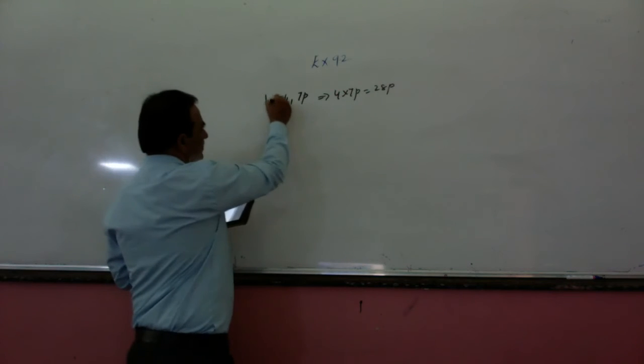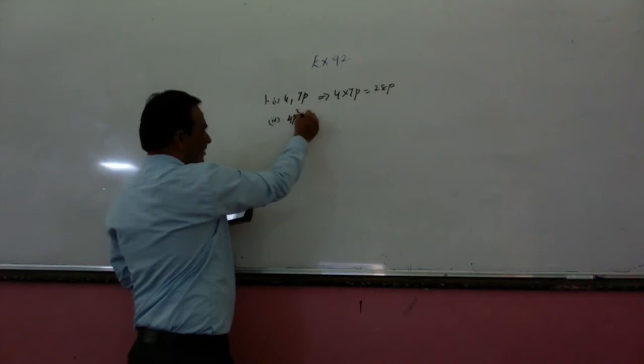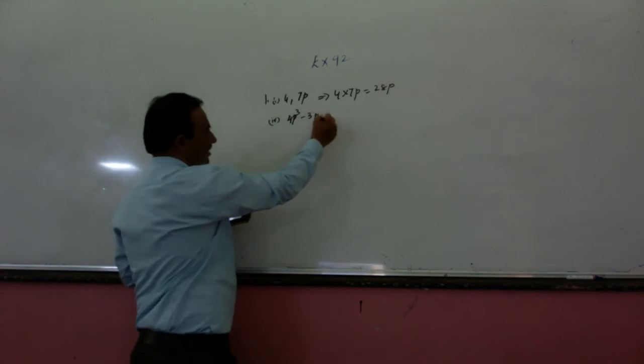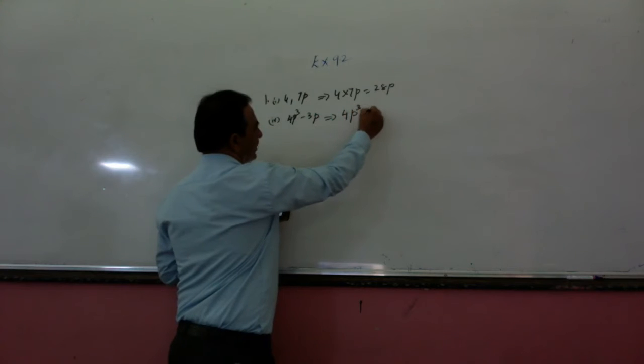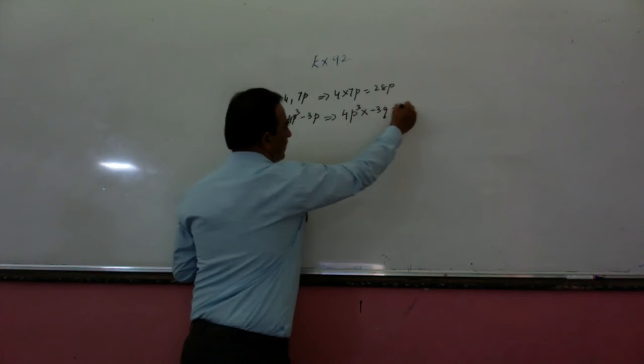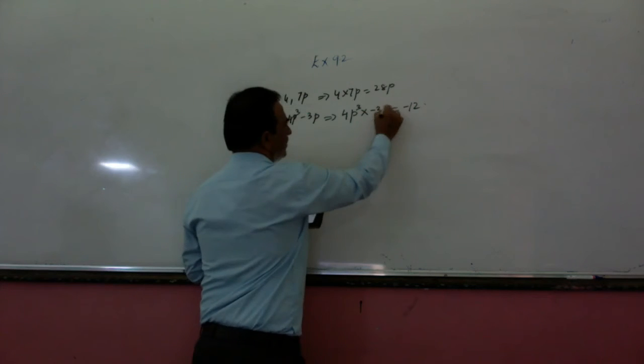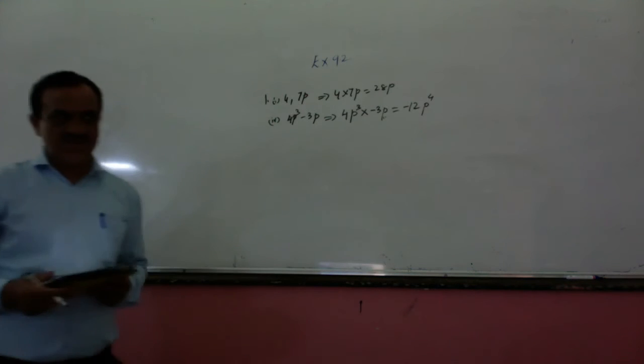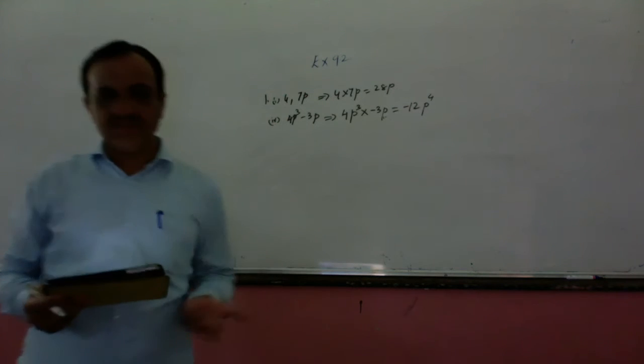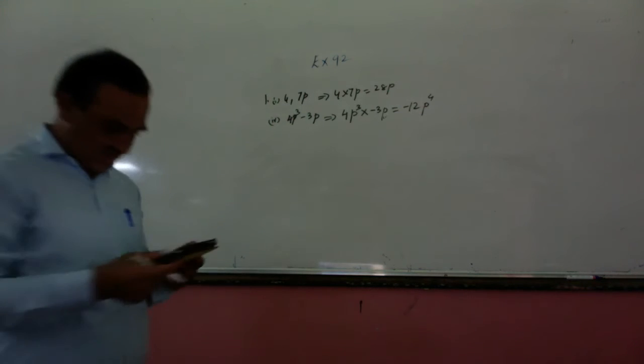Next one, this is first: 4TQ minus 3T. So you must multiply 4TQ into minus 3T, it will be minus 12. It is also T, so T raised to the power of 4. Means you have to add this power, you know the laws of exponents. In multiplication if the bases are same, the powers are added.